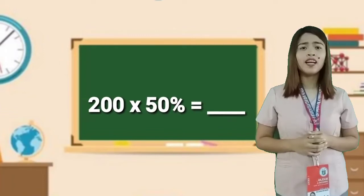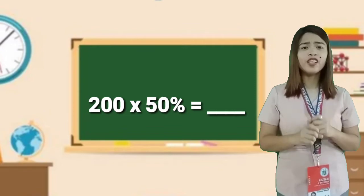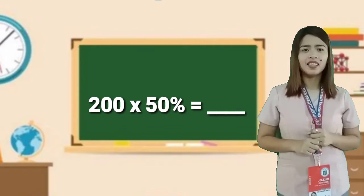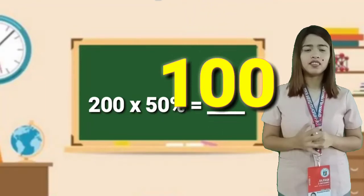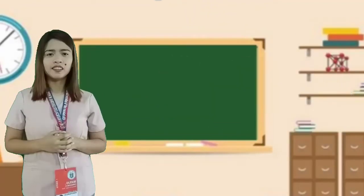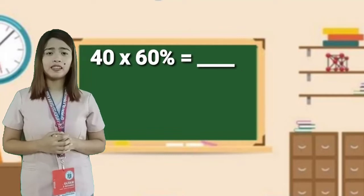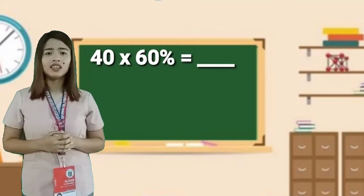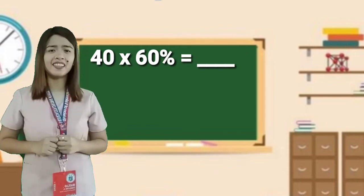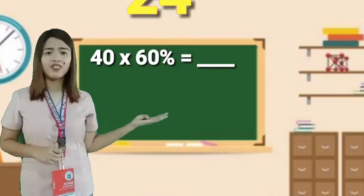Two hundred times fifty percent equals one hundred. Very good! Forty times sixty percent equals twenty-four. You're right!